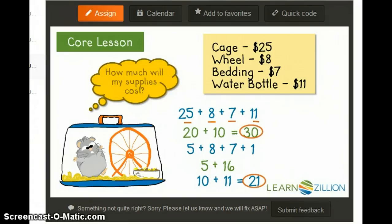30 and 21 are the partial sums. So when I add 30 plus 21, I get 51. The hamster supplies will cost $51.